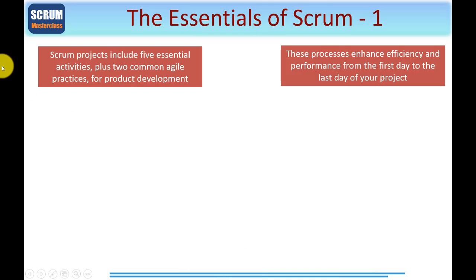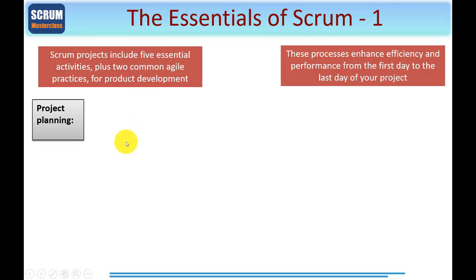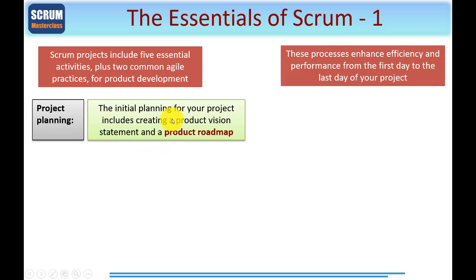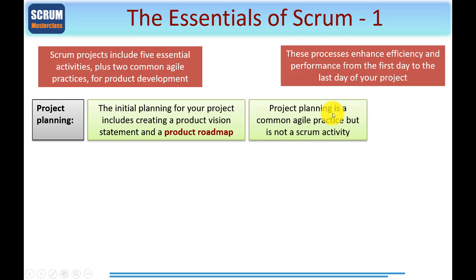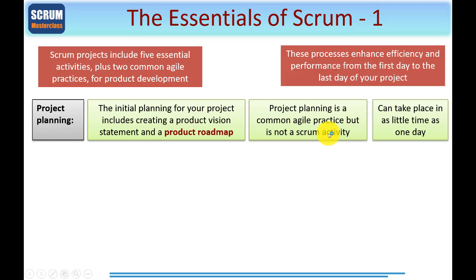Scrum projects include five essential activities plus two common Agile practices for product development. These processes enhance efficiency and performance from the first day to the last day of your project. Starting with project planning — this is the initial planning for your project, and that would include creating a product vision statement and a product roadmap. Project planning is a common Agile practice, but it is not part of the Scrum activity. This is one of the secrets to taking Scrum with a PRINCE2 wrapper and linking the two together.